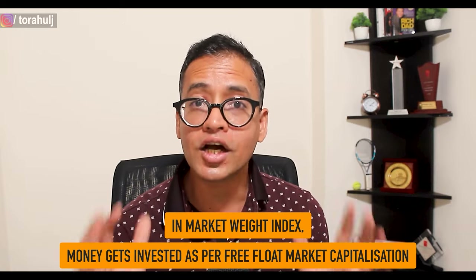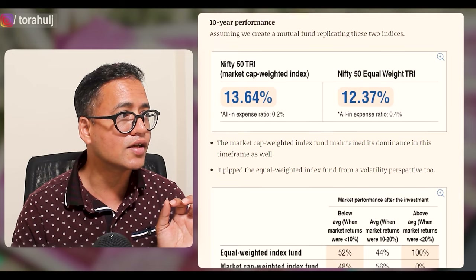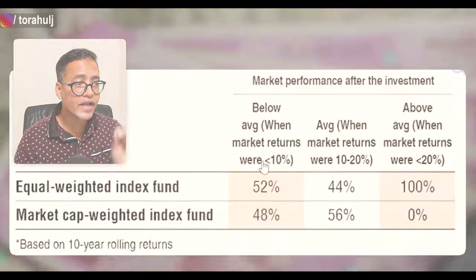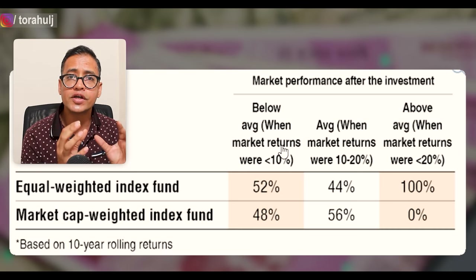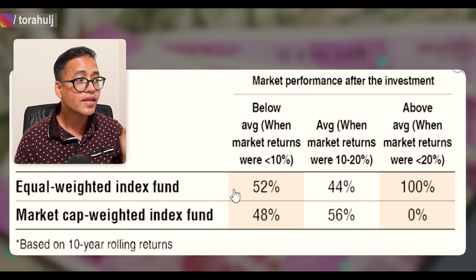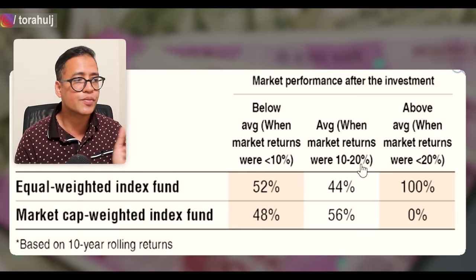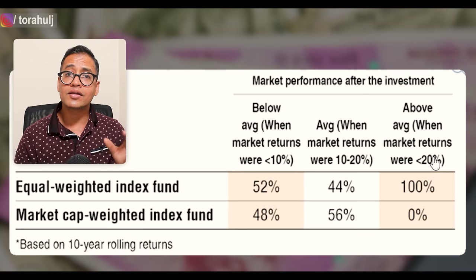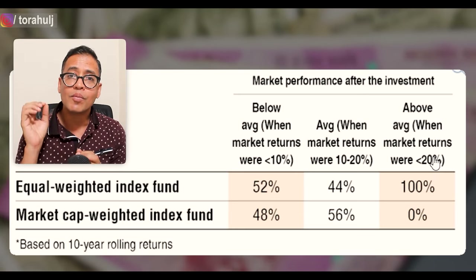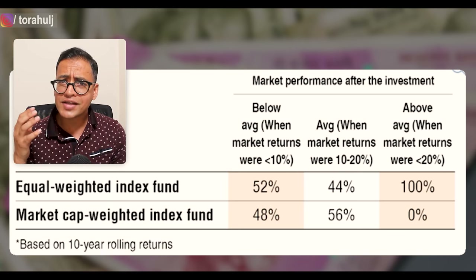There's a big difference in performance between these two fund types. Looking at 10-year data: when the stock market gives less than 10% returns in a year, equal weight index funds perform better than market cap. When the market gives 10–20%, market cap weighted funds tend to outperform. But during bull runs with over 20% returns, equal weight index funds give far better returns than market cap weighted ones.